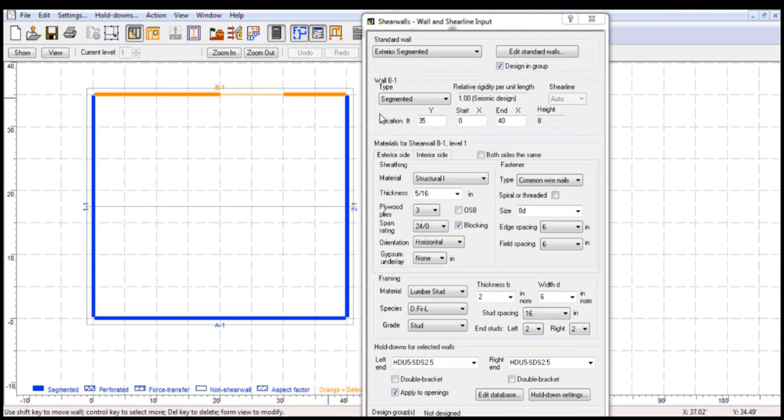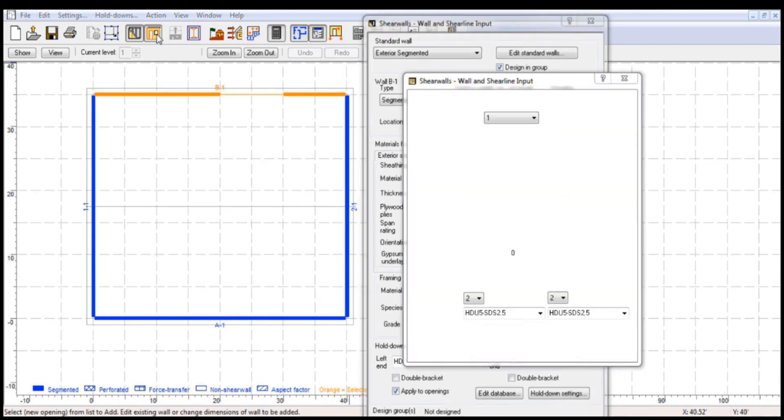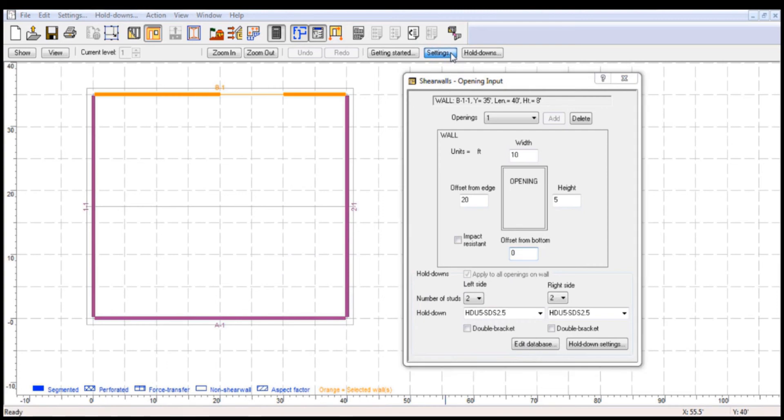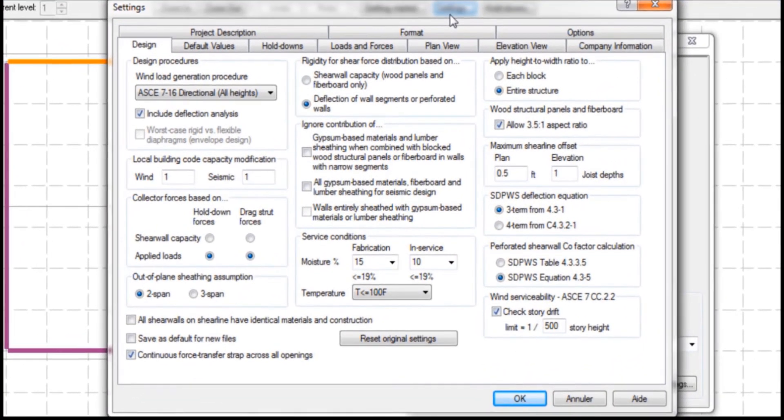Now, let's demonstrate this example inside the software. Notice that this is the same structure used throughout the first part of this video. The link to download this file is available in the description below. Shear walls distributes forces based on either the deflection-based distribution or the capacity-based distribution. You can select which one to use in the settings design tab. Including the deflection analysis opens the option to select the distribution based on deflection of wall segments or perforated walls. In fact, the software selects this option by default. Otherwise, a shear force distribution based on the shear wall capacity will be selected.